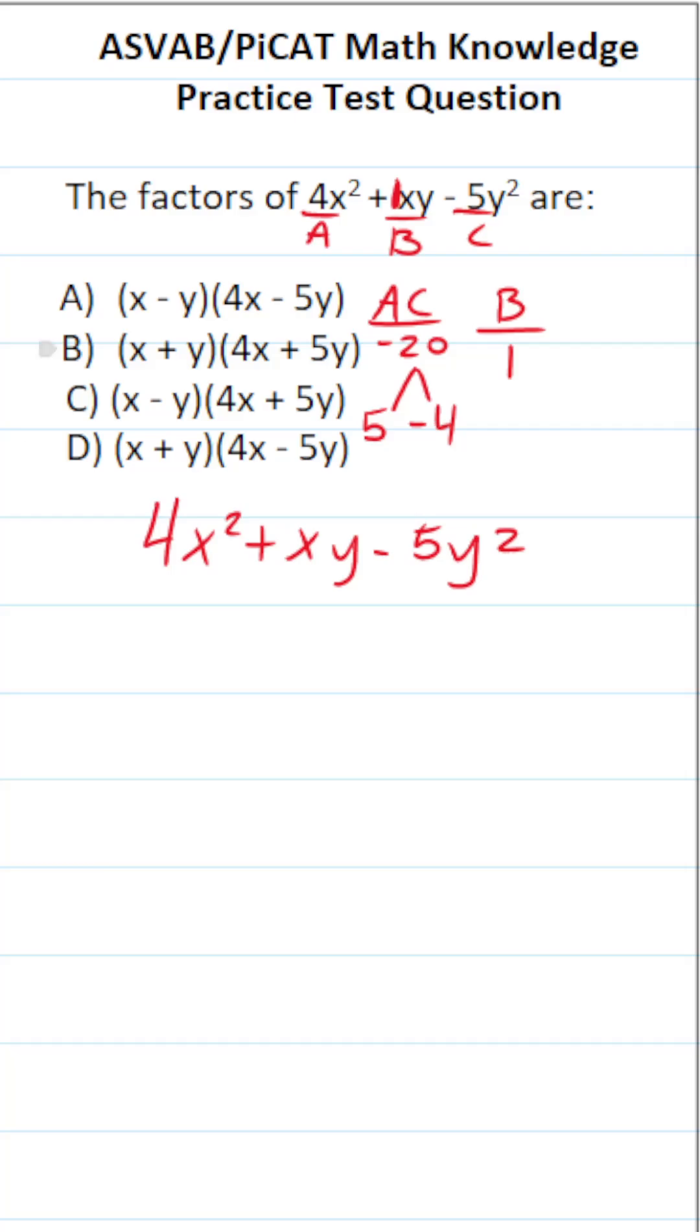5 times negative 4 is negative 20. 5 plus negative 4 is positive 1. What's more, it says take these two numbers and rewrite the middle term using both of those numbers such that you can then factor by grouping. So let's go ahead and do that. This becomes 4x squared. And I'm going to put the negative 4 first because I have a 4x squared here minus 4xy plus 5xy minus 5y squared.